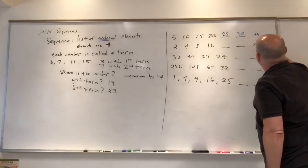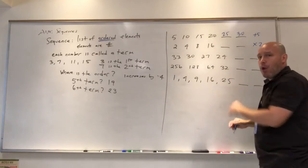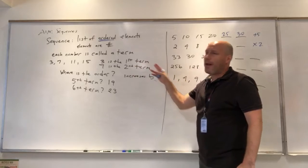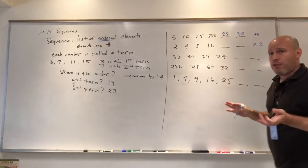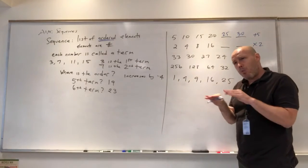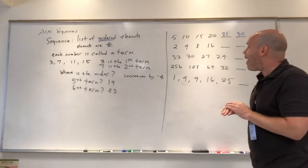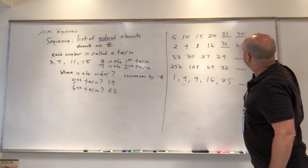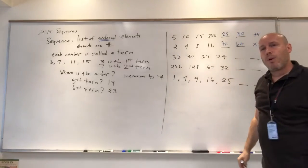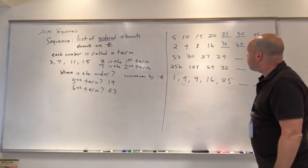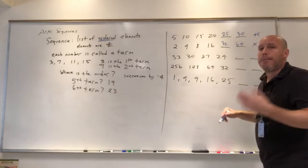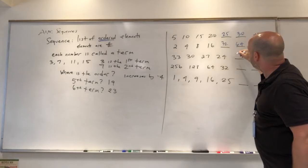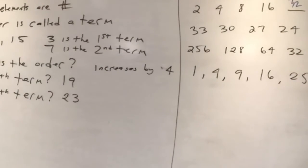You said it multiplied by two each time. In this class we're going to be studying adding, subtracting, multiplying, or dividing — there are other types of sequences but we're not concerned with those. So the next two terms are 32, 64. The third sequence decreases by 3 each time, so we continue: 21, 18.